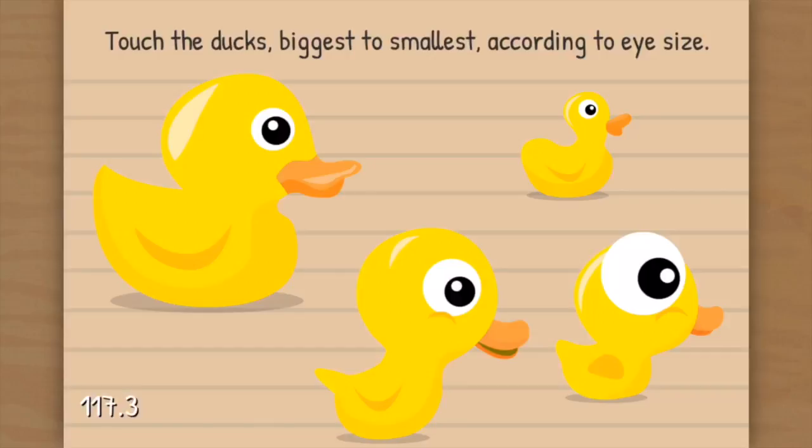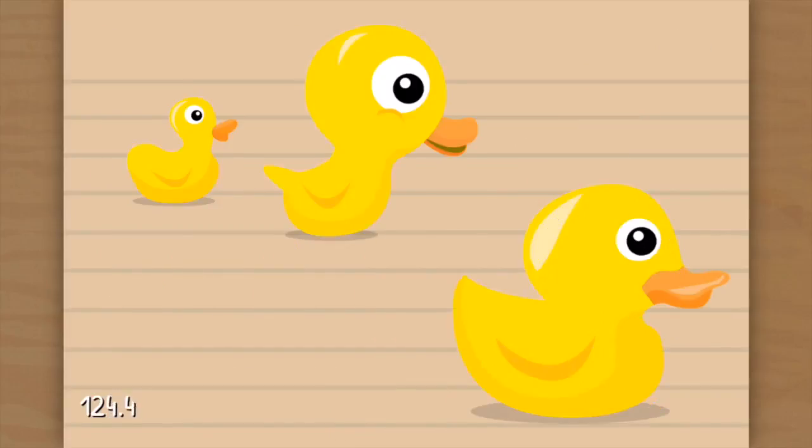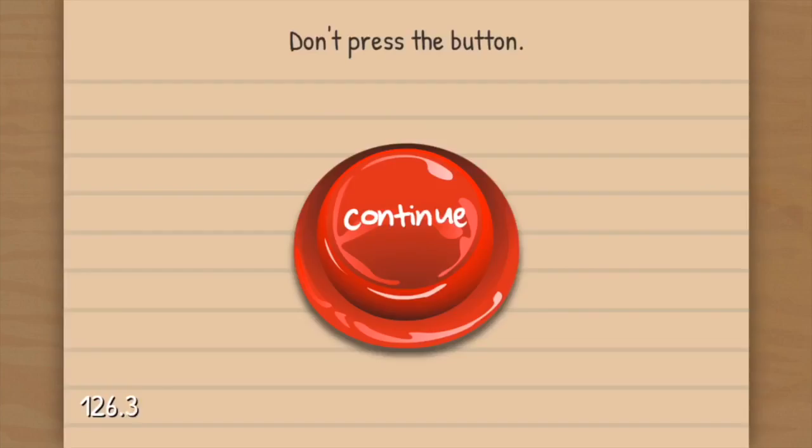Tap the ducks biggest to smallest according to eye size. Now it's a little different and I see that one over there on the right. That's a giant eye. So just look at the eyes. Okay, there you go. There you go. And there you go.